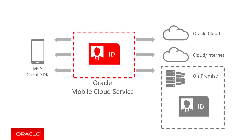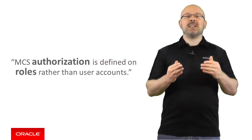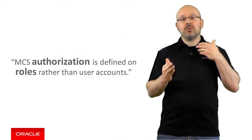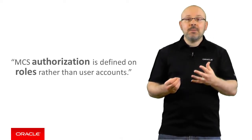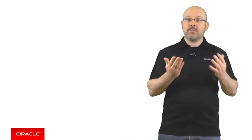MCS allows you to define user accounts and roles that are specific to the users of your mobile applications. This means you can tailor the security model to the needs of your mobile apps. Access to your mobile assets, such as custom APIs and storage collections, is possible to authorized users only. MCS authorization is defined on roles rather than user accounts, which streamlines the user management process. After all, aren't your business processes built around roles rather than persons?